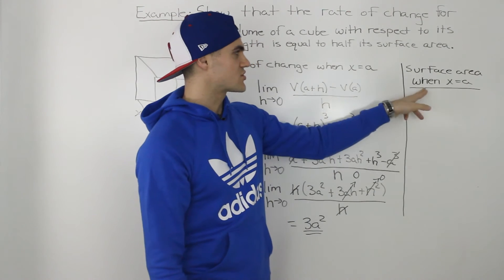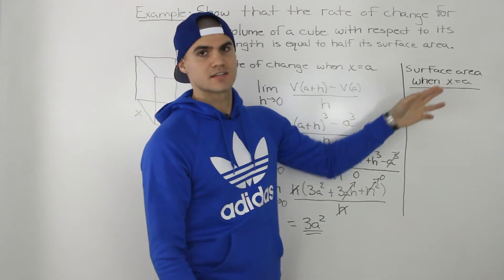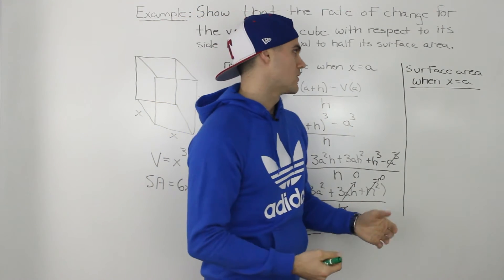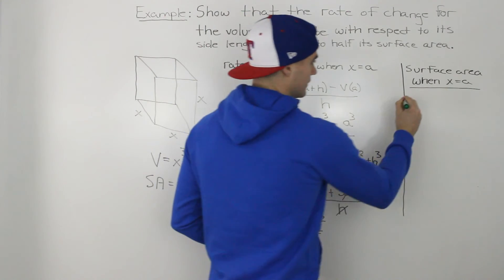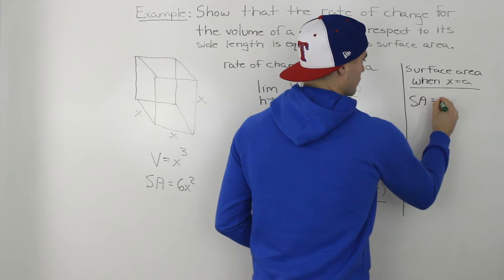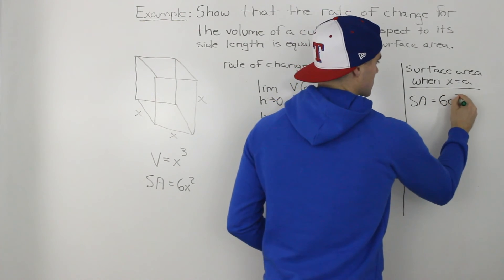Now similarly, what's the surface area when the side length is equal to some number a? Well we know the surface area formula is 6x squared so we would just plug in a for x. So we'd have 6a squared.